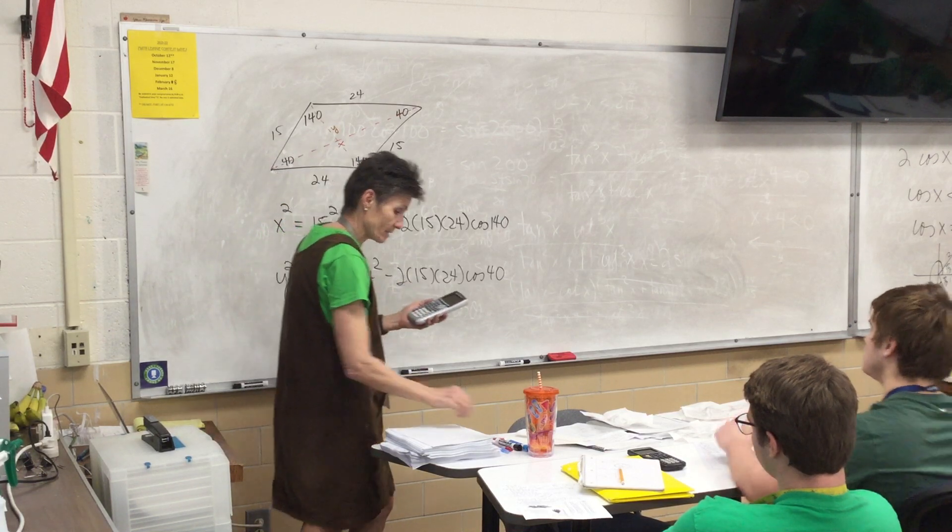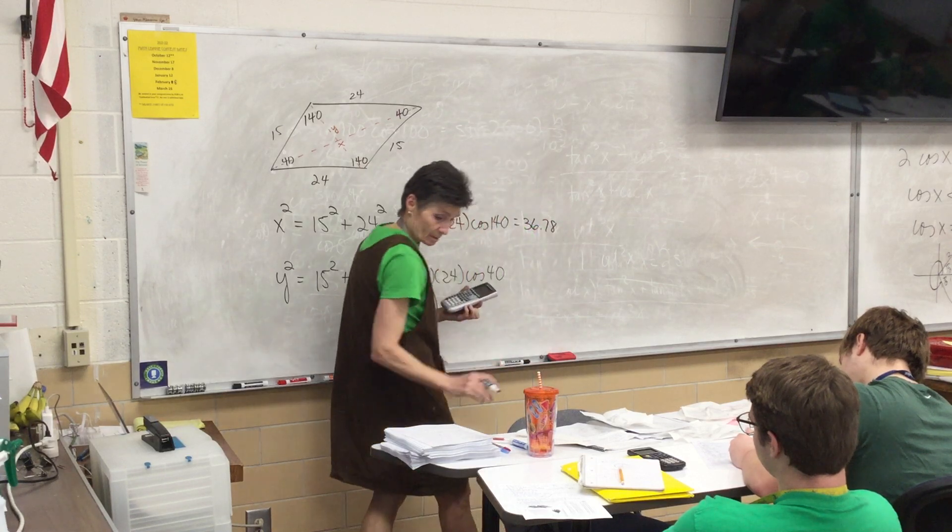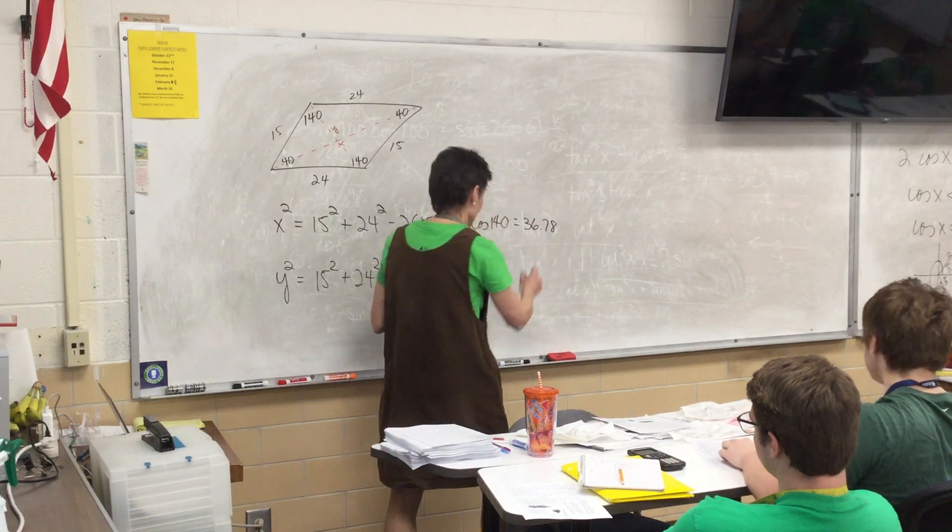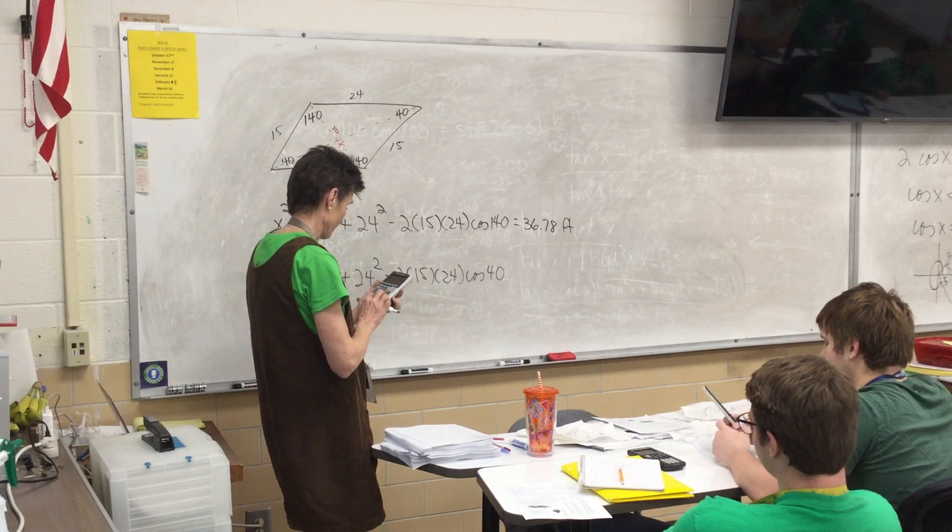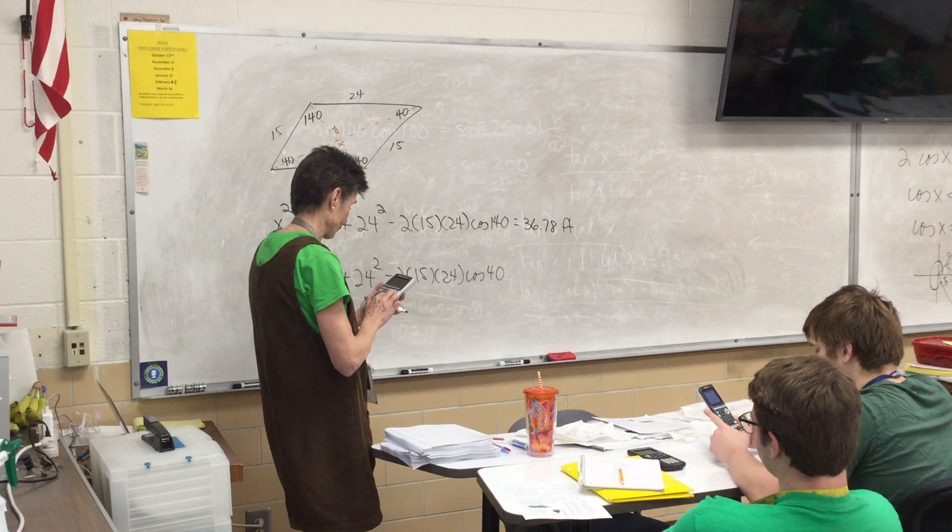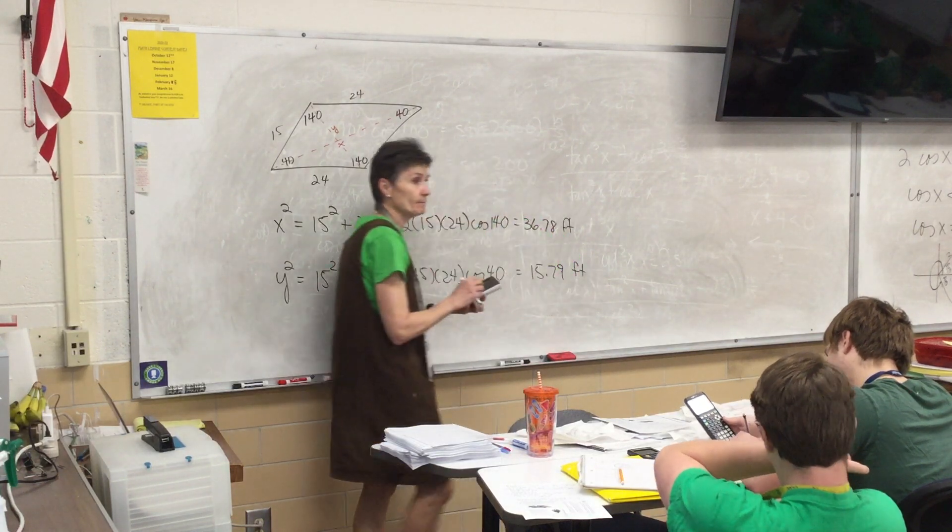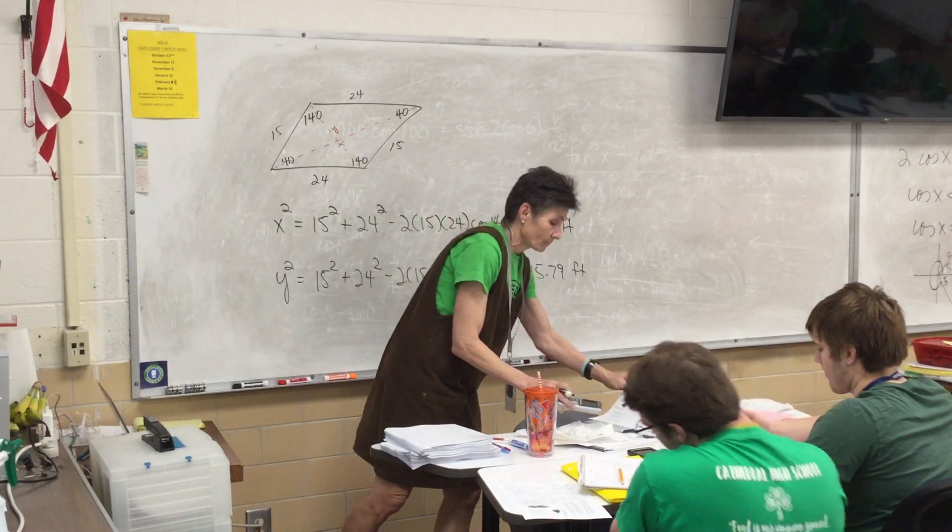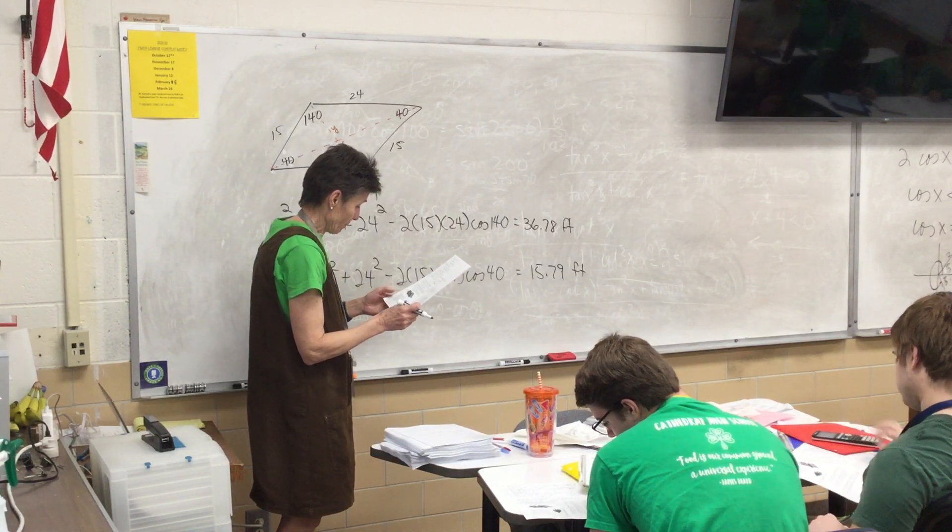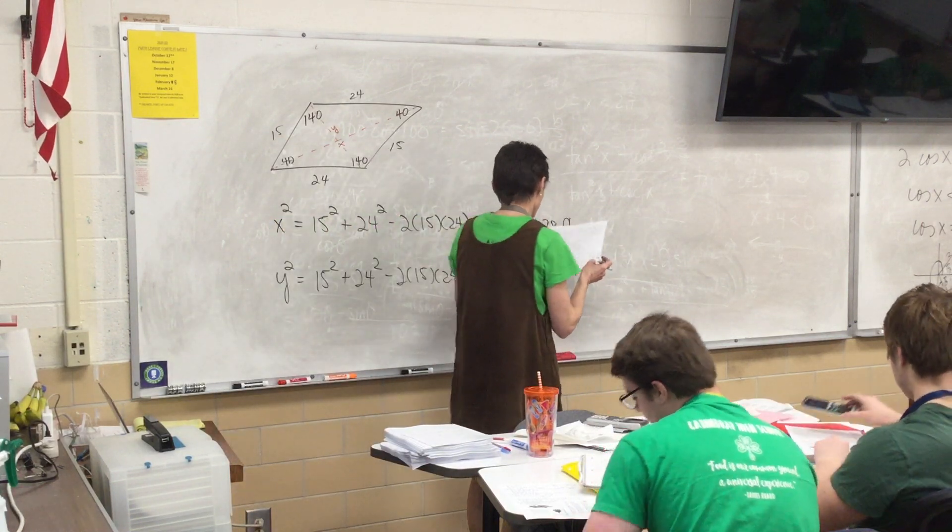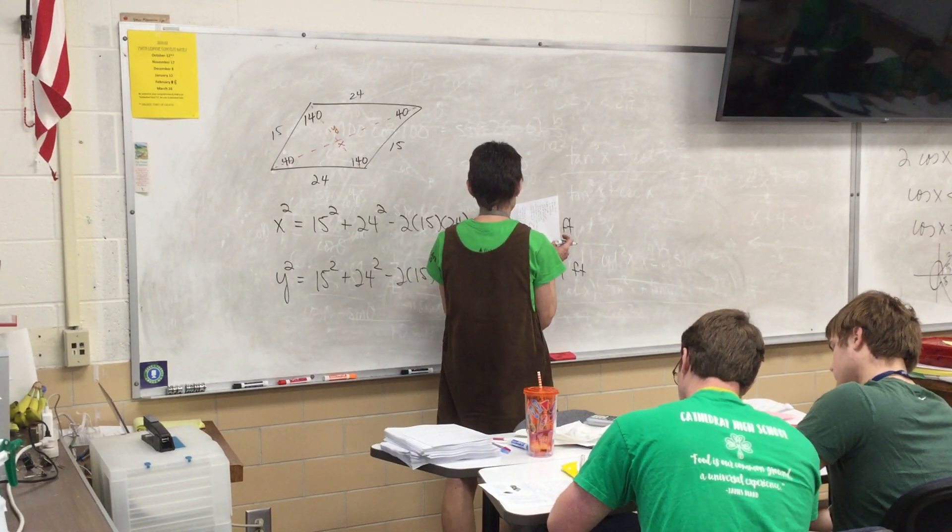For the short one, I got 36.7, or excuse me, the long one, I got 36.78, and for the other one, I got 15.79. Those look okay, everybody? Match those. All right, what else? Yeah, Anna. Can you do 12D? 12D.